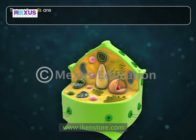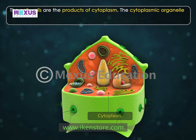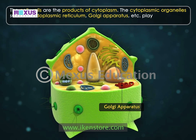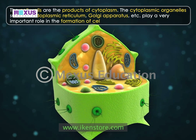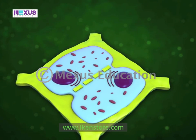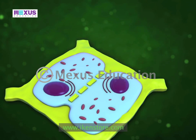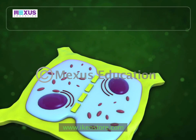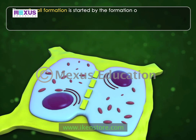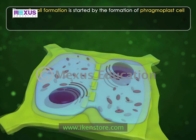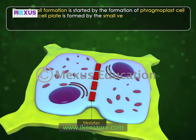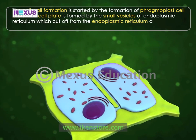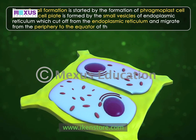The cell walls are the products of cytoplasm. Cytoplasmic organelles such as the endoplasmic reticulum, Golgi apparatus, etc. play a very important role in the formation of the cell wall. The process of new cell wall formation usually takes place in a dividing cell immediately after nuclear divisions. The cell wall formation is started by the formation of the phragmoplast cell plate, which is formed by small vesicles of endoplasmic reticulum that cut off and migrate from the periphery to the equator of the cell.